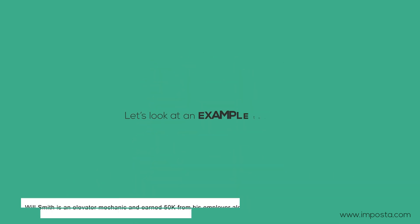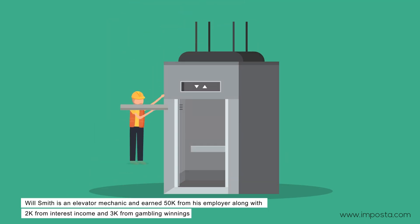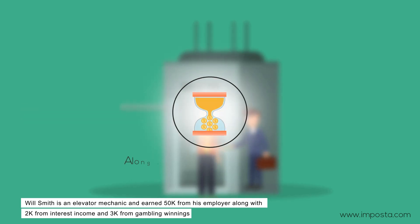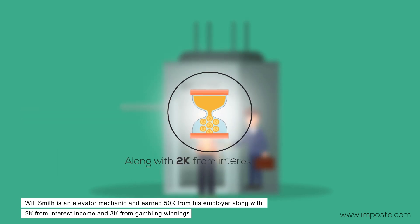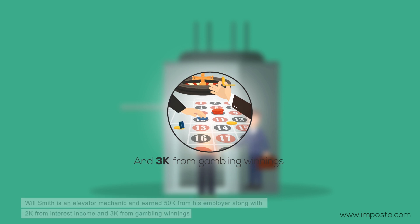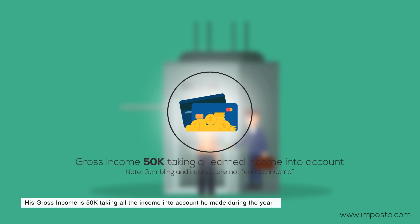Let's look at an example together. Will Smith is an elevator mechanic and earned $50k from his employer, along with $2k from interest income and $3k from gambling winnings. Will's adjusted gross income is $50k, taking all earned income into account that he made during the year.